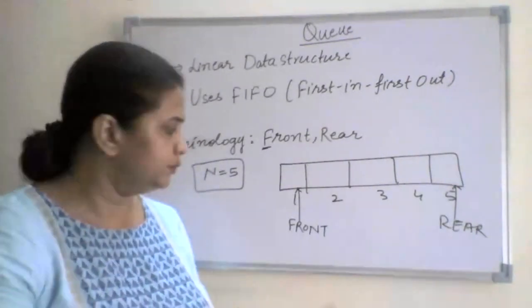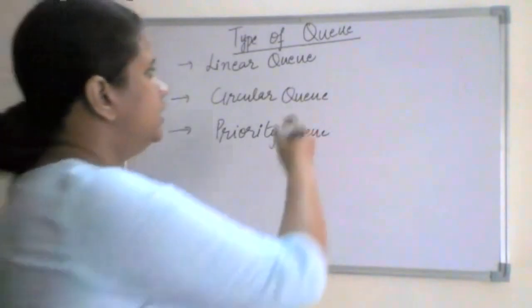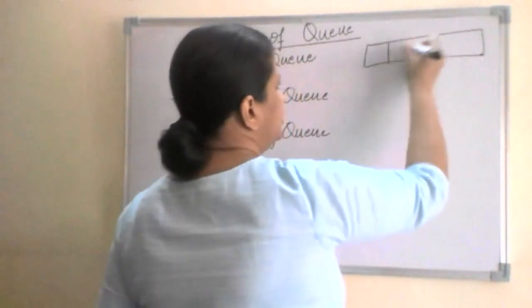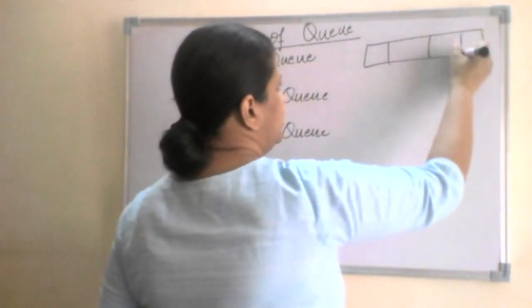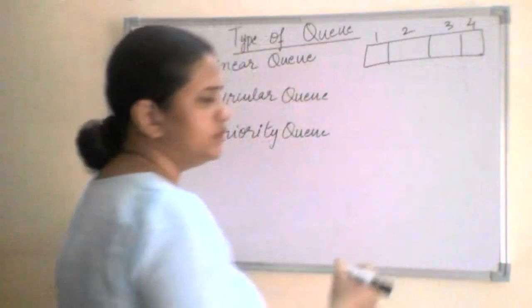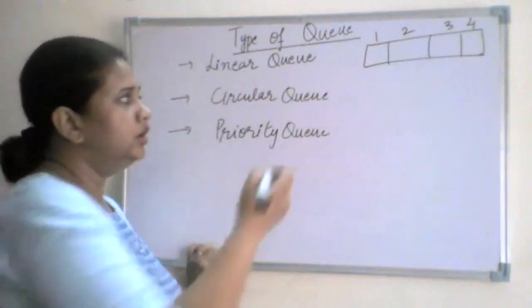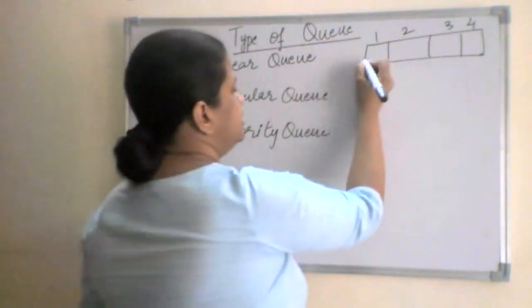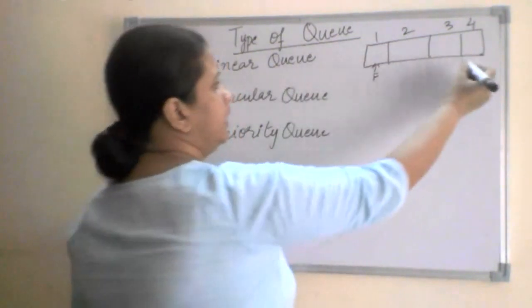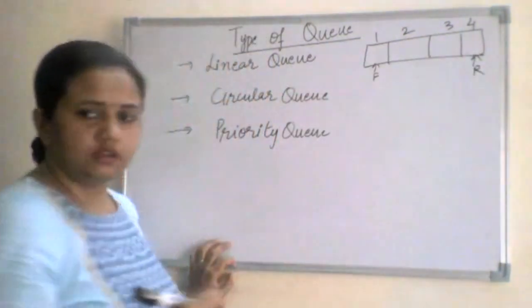There are three basic types of queues available to us. The first is the linear queue. This is how you represent a linear queue — it has elements with a front pointer (F) representing the front end and a rear pointer representing the rear end.